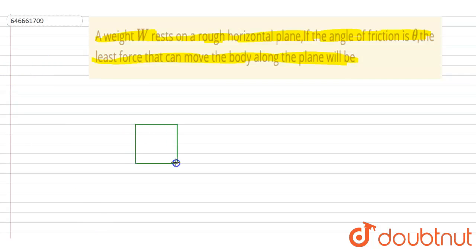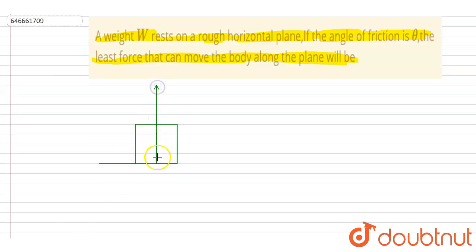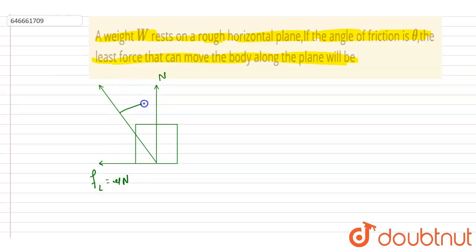Let us first understand the angle of friction. The angle of friction is the angle that the net reaction by the ground makes with the vertical at limiting friction. So if you see, this is the normal reaction and this is the limiting friction, and we know that limiting friction is mu*N. This angle will be the angle of friction theta.